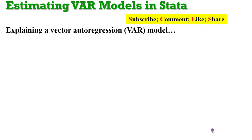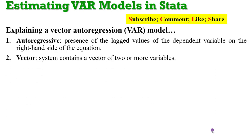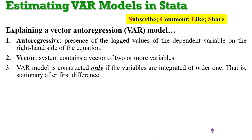How do you go about explaining what a vector autoregression model is all about? The word autoregressive indicates the presence of the lagged values of the dependent variable on the right-hand side of the equation. And the word vector shows that the system contains a vector of two or more variables.